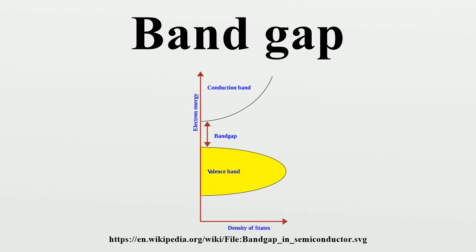The term band gap refers to the energy difference between the top of the valence band and the bottom of the conduction band. Electrons are able to jump from one band to another.